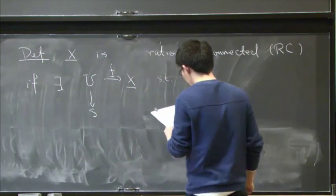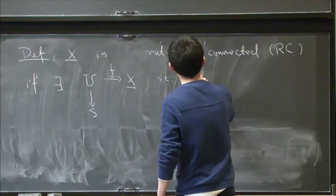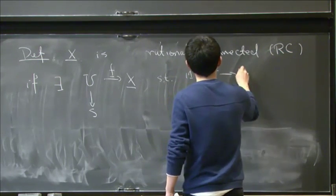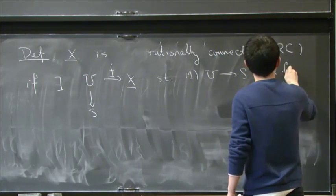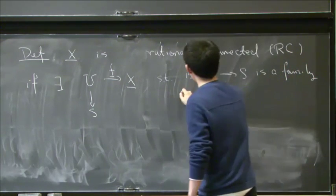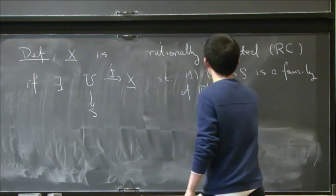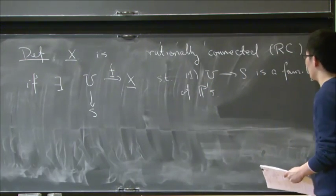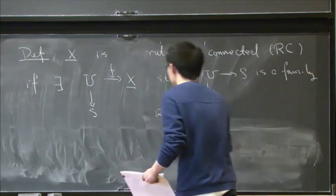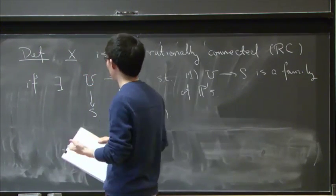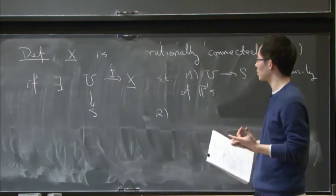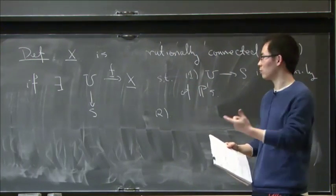Such that first, the family U map to S is a family of rational curves. And second, we want X covered by rational curves in the strongest possible situation. So we would like any two point of X can be joined by a rational curve.